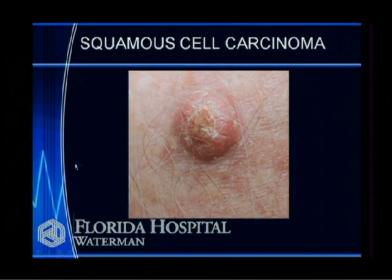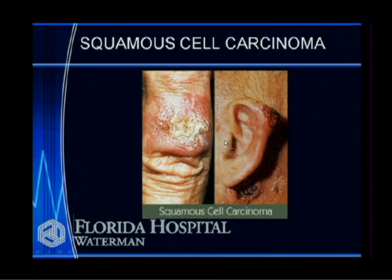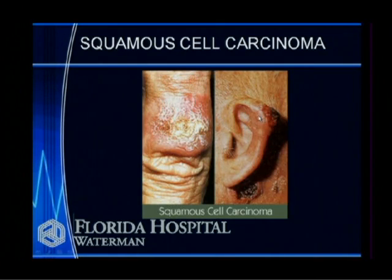Here's another squamous cell carcinoma with a central keratotic plug and raised pink-red edges. Here's one on the finger and one on the ear — a very common place to see it. When they made baseball caps, they didn't make a rim that went all the way around, so men wear baseball caps with a visor but no sun protection for their ears. Skin cancers on the ears are pretty common. If you're going to wear a hat, wear one with a rim that goes all the way around — a sombrero.